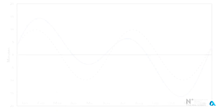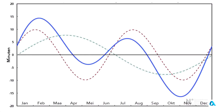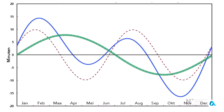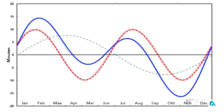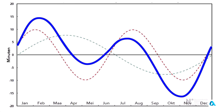They illustrate it as a graph, and we will now take a look at this graph. The green line shows the difference between true solar time and mean solar time arising from the ellipticity of Earth's orbit. The red line shows the same difference arising from the tilt of Earth's axis. The blue line represents the sum of these two, and it is precisely this blue line that is called the equation of time graph.